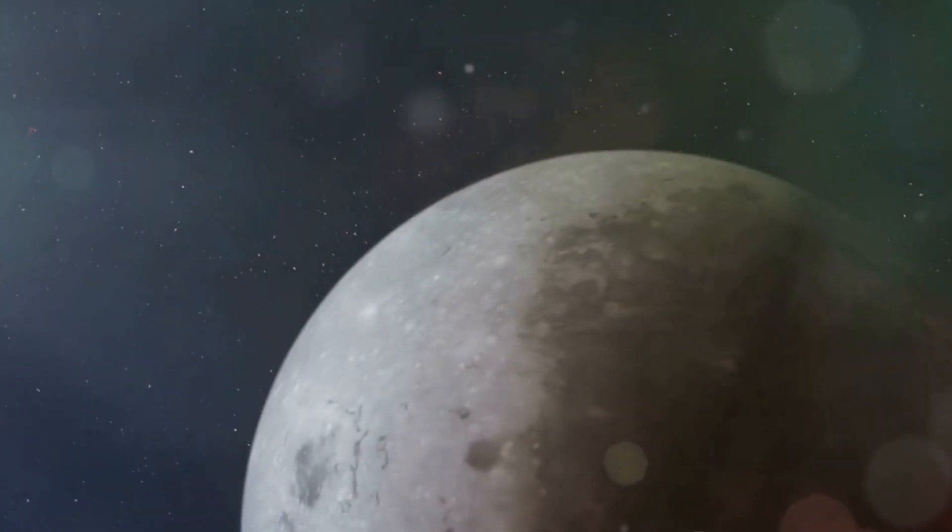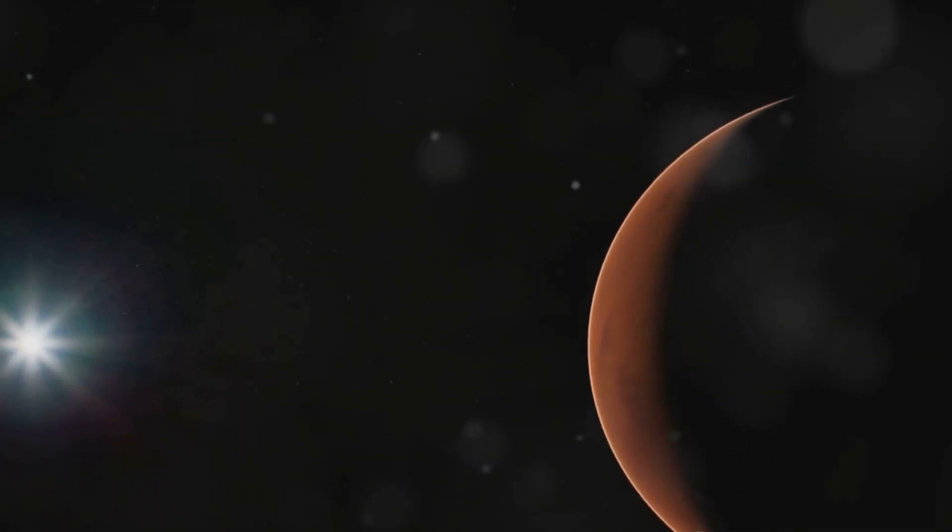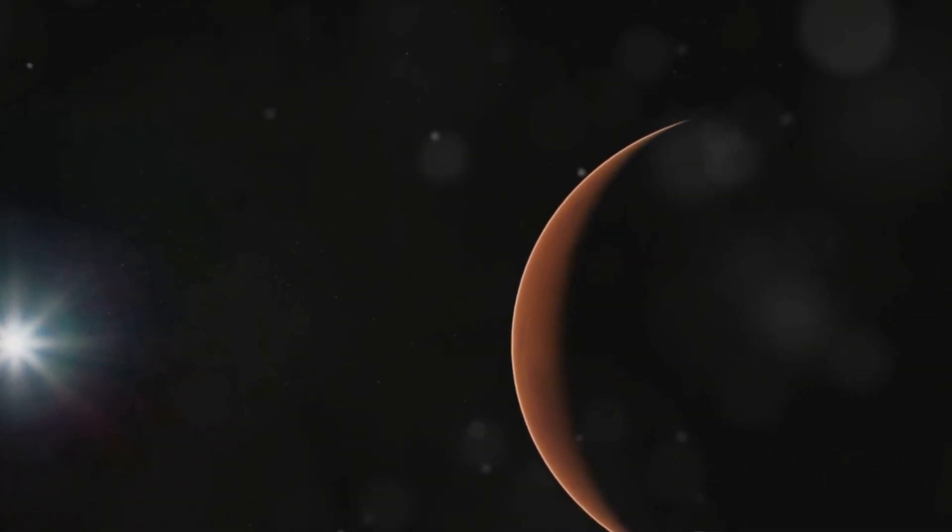Instead of the total solar eclipses we see on Earth, Mars experiences what are known as transit or annular eclipses. When these eclipses occur, Phobos or Deimos pass in front of the sun, appearing as dark silhouettes against the sun's glowing disk.